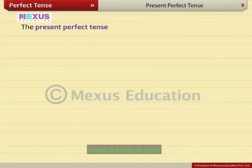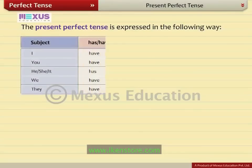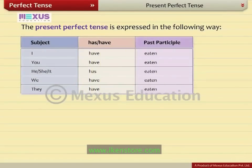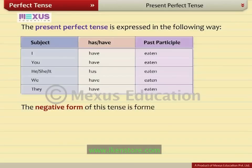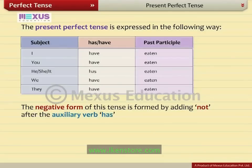The present perfect tense is expressed in the following way: have or has plus past participle. For example, I have eaten, she has eaten. The negative form of this tense is formed by adding 'not' after the auxiliary 'has' or 'have'. For example, we have not eaten dinner.